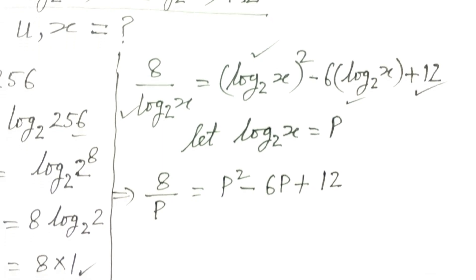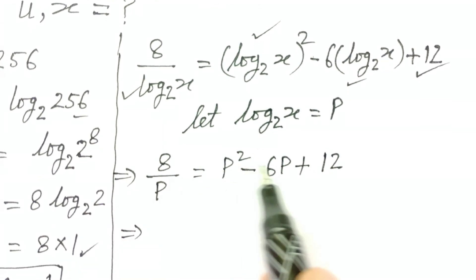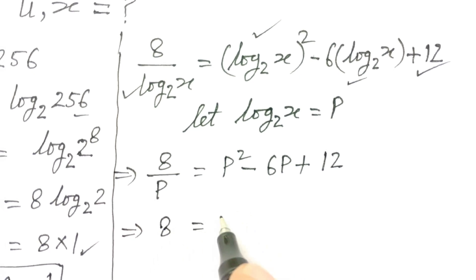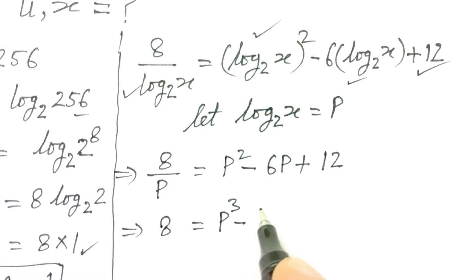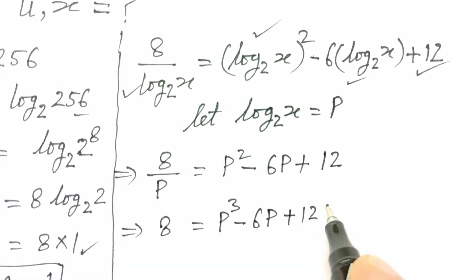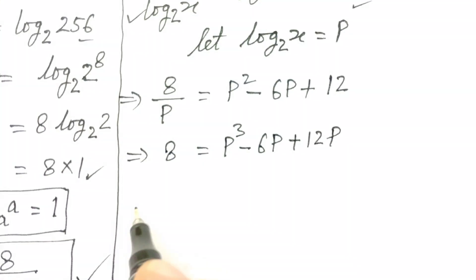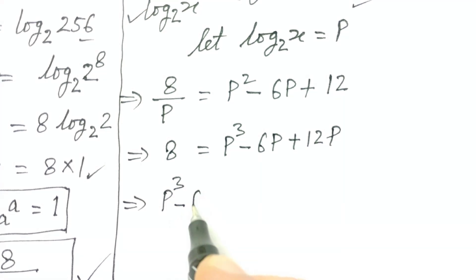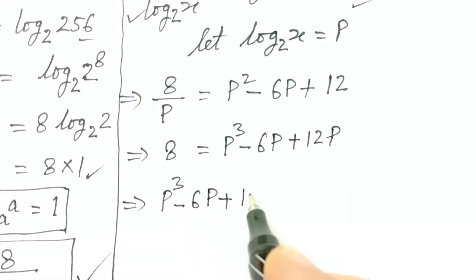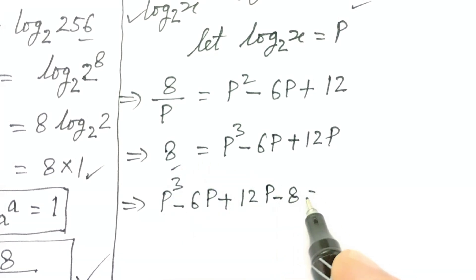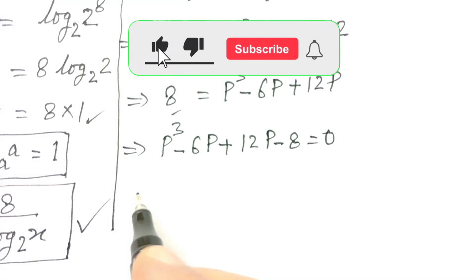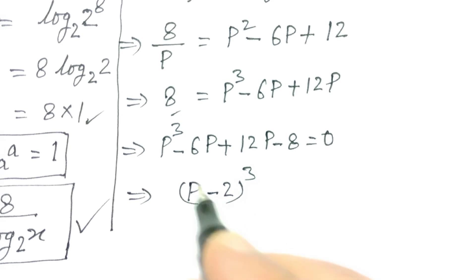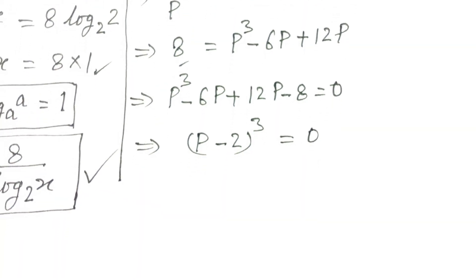So 8 over p is equal to p squared minus 6p plus 12. If we multiply the whole equation by p, we get 8 equals p cubed minus 6p squared plus 12p. Rearranging: p cubed minus 6p squared plus 12p minus 8 is equal to 0.